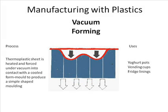And vacuum forming: a thermoplastic sheet is heated and forced under vacuum into contact with a cooled mould to produce a simple shape. Yogurt pots, vending cups and fridge linings are examples of vacuum forming. Why don't you ask your teacher to show you vacuum forming in the workshop?